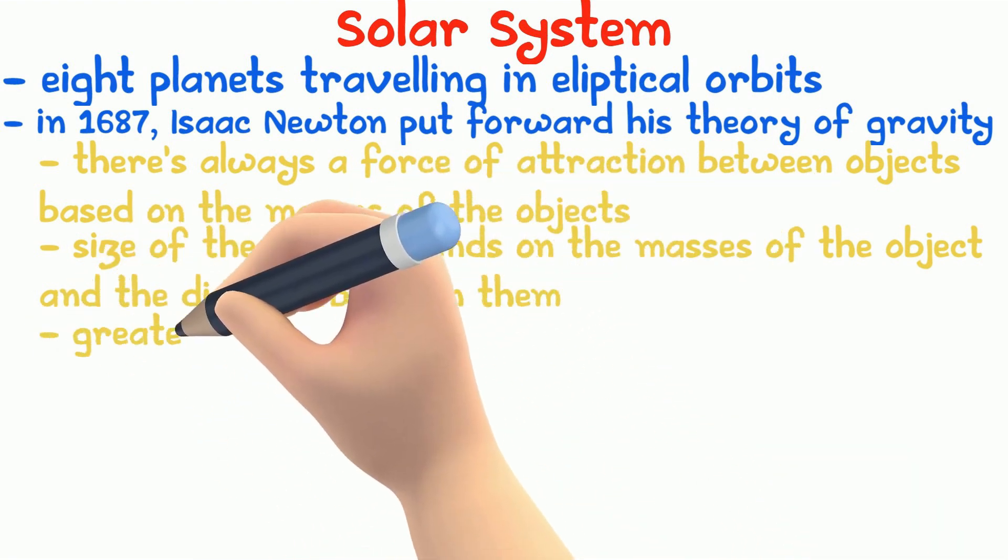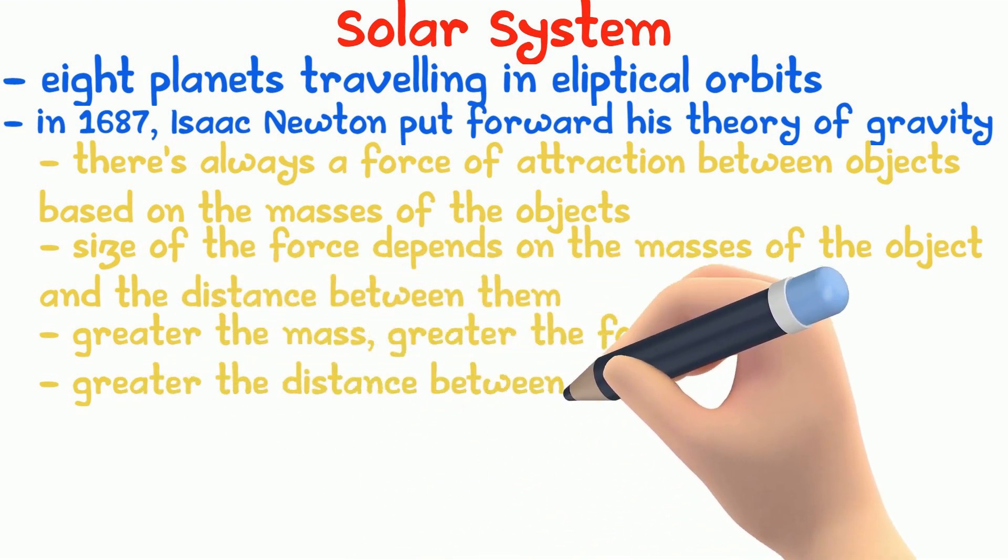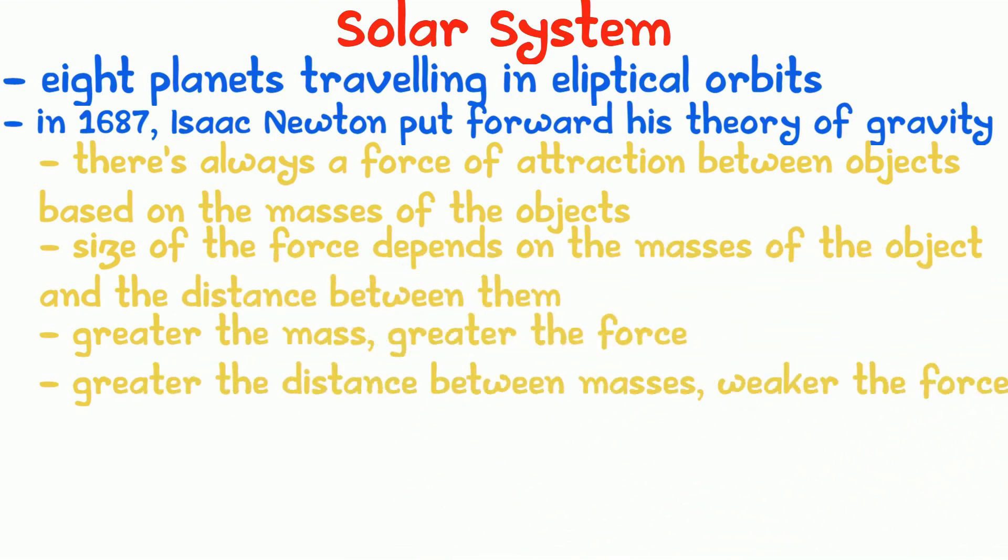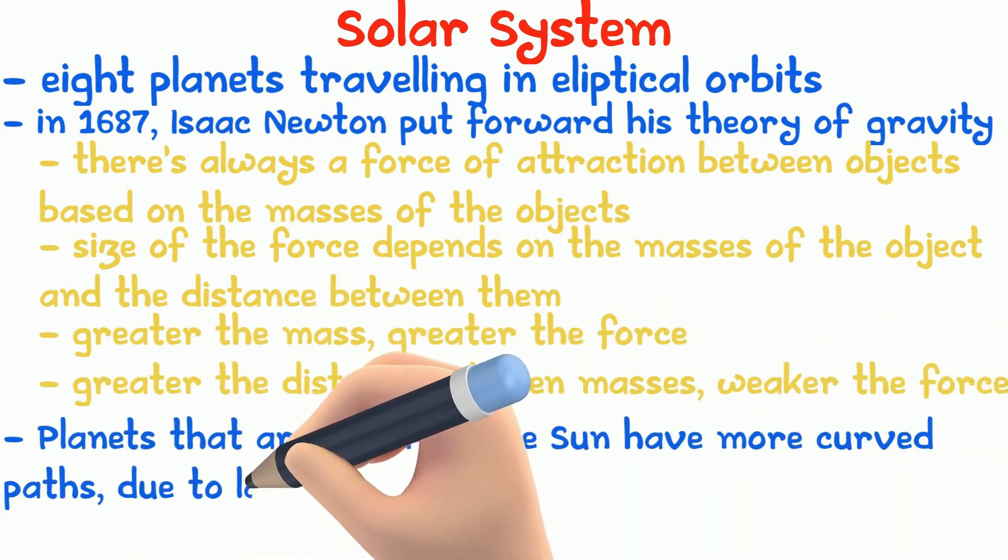The greater the mass, the stronger the attraction force. The greater the distance between the masses, the weaker the force. Our sun is huge, so the gravitational force between the sun and the planets is also huge. It's what holds our solar system together and makes the planets follow their curved paths. Planets that are closer to the sun have more curved paths due to the larger attraction forces.